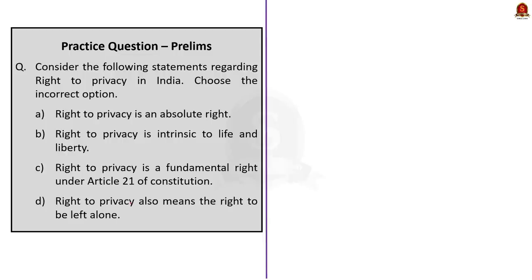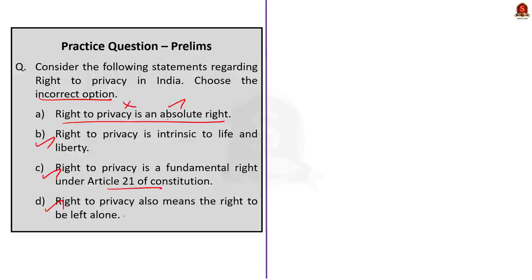Question 2: Consider the following statements regarding right to privacy in India and choose the incorrect option. Option 2: Right to privacy is intrinsic to life and liberty — this is correct. Option 3: Right to privacy is a fundamental right under Article 21 of the Constitution — this is also correct, as confirmed by the Supreme Court in the Puttaswamy judgment. Option 4: Right to privacy also means right to be left alone — this is also correct. Option 1: Right to privacy is an absolute right — this is incorrect, because right to privacy is not an absolute right; it can be restricted by legislation. All fundamental rights have reasonable restrictions. Since the question asks for the incorrect option, the correct answer is option A.